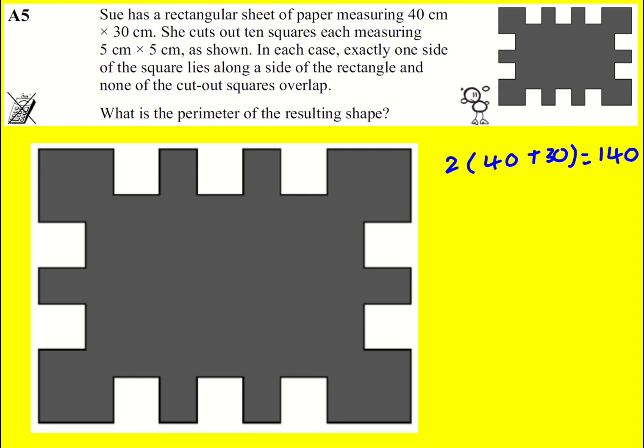Alright, now we're taking, we're cutting out 10 squares. Okay, so we're cutting out a bit here but then we're going to get that bit back and then we're going to get an extra amount. In fact, we're going to get another, because they're 5 by 5, we're going to get another 10 centimeters for each one.